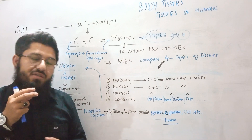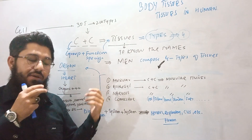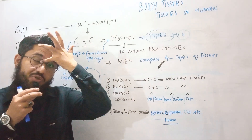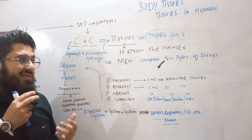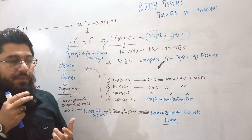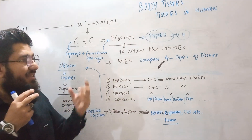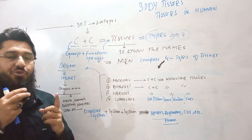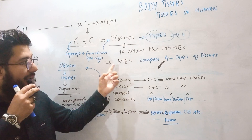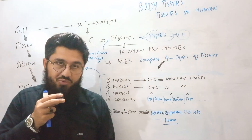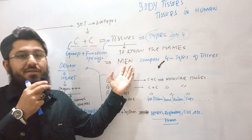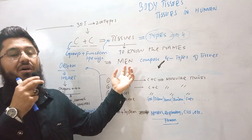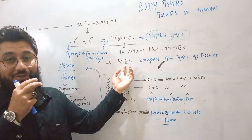When someone asks you — after a long time — how many types of tissues there are and you forget, I'm going to tell you a very simple and interesting trick. It's actually a sentence. If you learn this sentence, you will never ever forget the types of tissues in your life. Concentrate: 'Men compose four types of tissues.' From this particular sentence, you will be able to memorize and tell others about the four types of tissues.